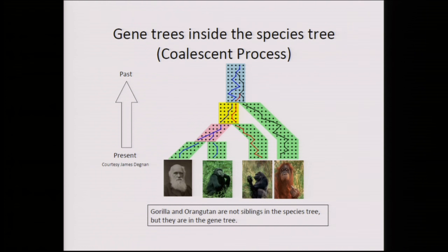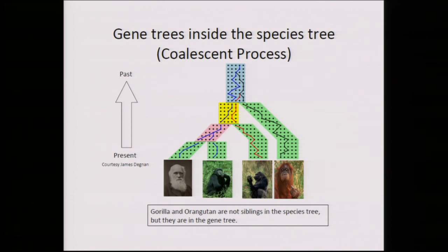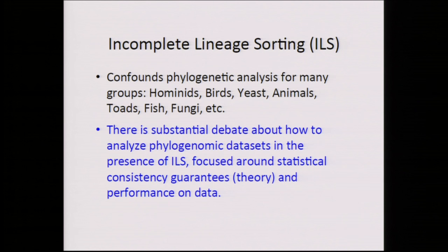When I say a gene tree, I'm talking about the tree on a specific region of the genome — it doesn't have to be a gene; it could be intronic data. Gene trees can be different from the species tree, and gene trees evolve within the species tree. This picture shows a gene tree where gorilla and orangutan appear as siblings, and they shouldn't be. Incomplete lineage sorting is the outcome of the multi-species coalescent process that produces gene trees different from the species tree.